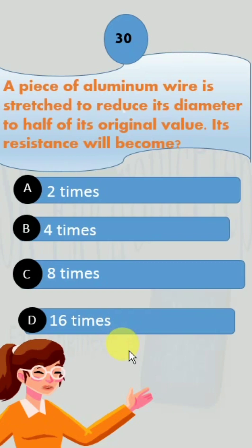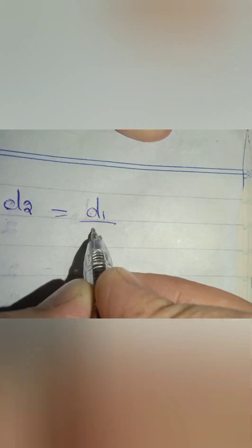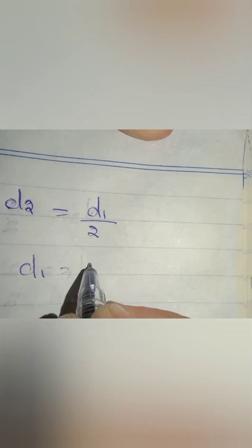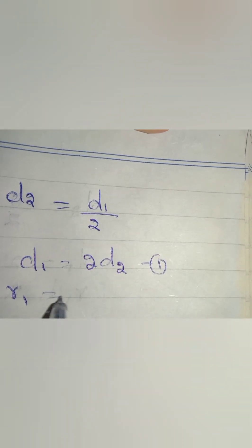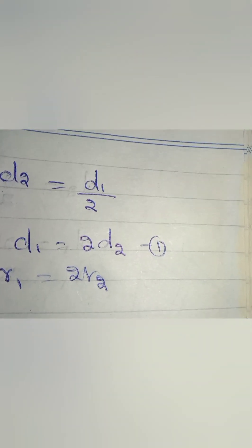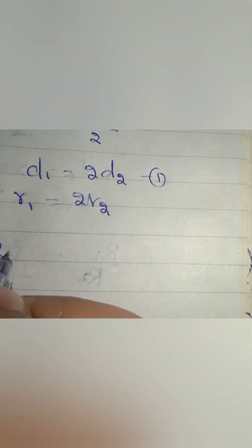We have been given that the new diameter has been reduced by half the value of original diameter, so we can write d2 equals d1 over 2, where d1 is the original diameter and d2 is the new diameter. We can also write d1 equals 2d2. Similarly, r1 will also be equal to 2 times r2. Remember, r1 is the original wire and r2 is the stretched wire.